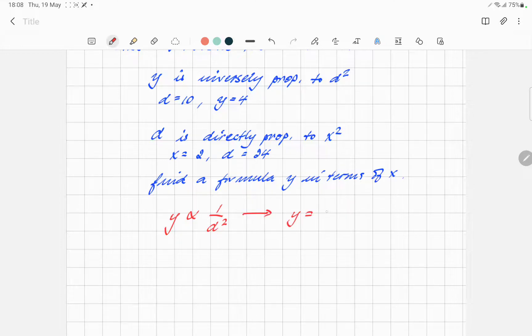So, y equals, we replace the proportion sign, always with an equals and then a k, a constant, over d squared. We know that when d equals 10, y equals 4. Therefore, 4 equals k over 10 squared.